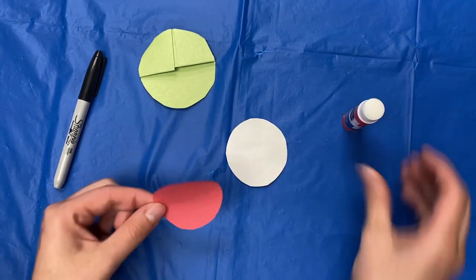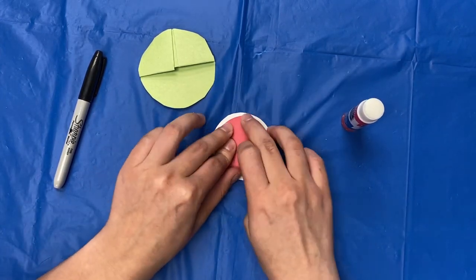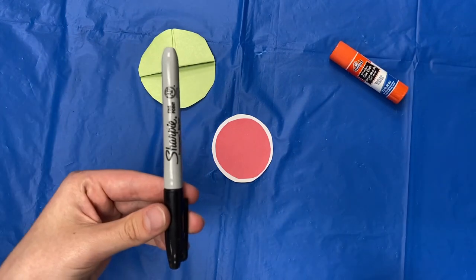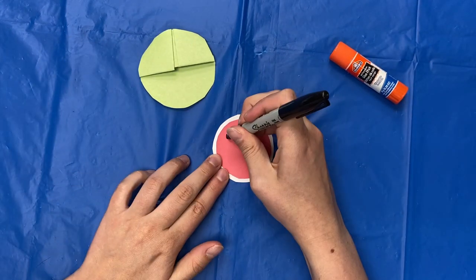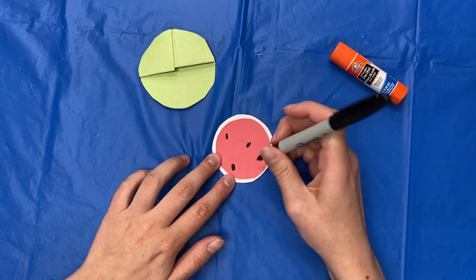Glue your red circle on top of your white one. Then take your black sharpie and draw watermelon seeds.